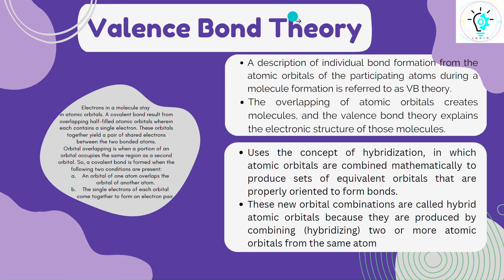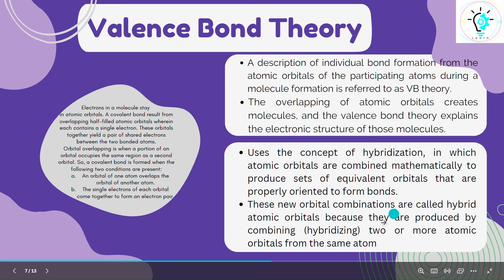Valence bond theory is a description of the individual bond formation from atomic orbitals of participating atoms during molecule formation. Atomic orbitals overlap to create bonds, and this gives rise to the valence bond theory concept. It uses the concept of hybridization. In hybridization, atomic orbitals combine mathematically and produce equivalent orbitals that orient to form bonds. These new combinations are called hybrid atomic orbitals because they are produced by combining or hybridizing two or more atomic orbitals.